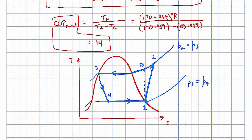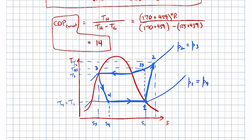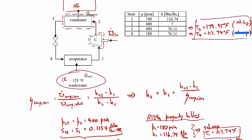On the temperature axis: T2 is highest, then T2S slightly less, then T3, while T4 and T1 are equal at the lowest isobar temperature. For specific entropy: S3 is lowest, S4 is a bit larger because the throttling valve is inherently non-isentropic, and entropy increases further from state 1 to state 2 because the compressor has 80% isentropic efficiency. State 4 is a saturated liquid-vapor mixture.